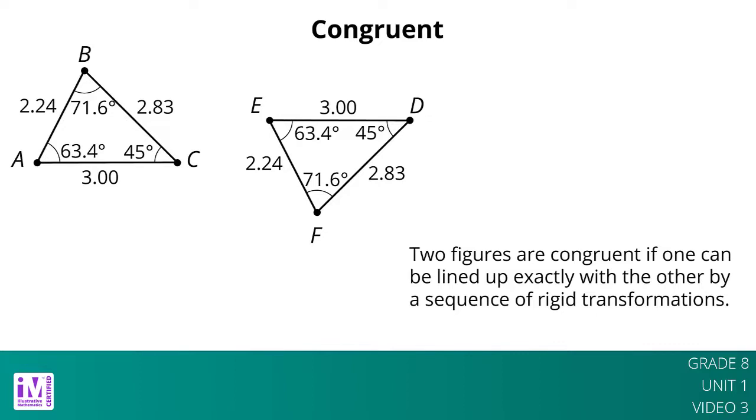We don't need to check all the measurements to prove two figures are congruent. We just have to find a sequence of rigid transformations that match up the figures. This is because we know lengths and angle measures stay the same under rigid transformation.